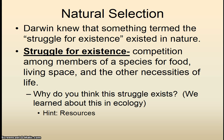Why does this struggle exist? It's because these necessities are not unlimited. We called this competition back when we were studying ecology — competition for limited resources. If you picture a field going through secondary succession: certain plants are going to move in, the ones that can grow taller are going to be more successful because they get that limited resource of sunlight, and the ones that can grow their roots deeper are winning the struggle for existence by getting water. Darwin used this idea to further develop his theory of evolution.